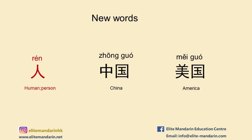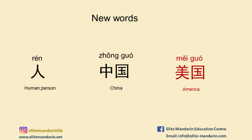Let's move to the new word 3. 人, which means human or person. 中国, which means China. 美国, which means America.